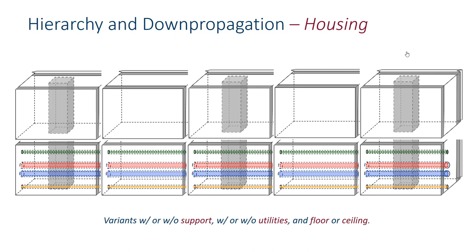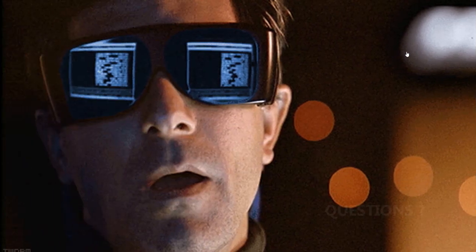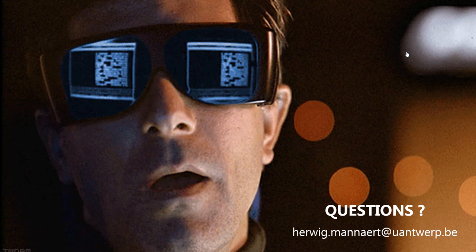That would provide encapsulation, interconnection, and down propagation — and you could build such houses. If you want to add another room, you could simply remove one wall, reuse these kinds of interconnected bricks to construct the next room, and have right away access to water, electricity, and heating without drilling in the existing walls. If you have any questions, my name is Herwig Mannaert, and you can always email me. Thank you.